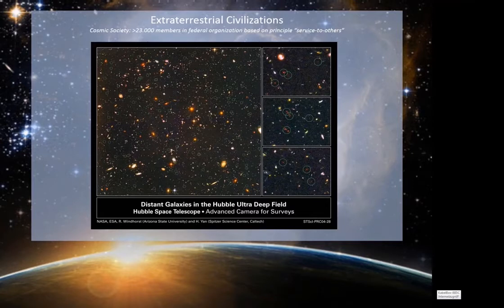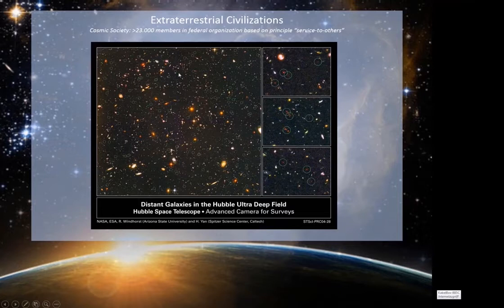What our extraterrestrial friends told us in the preparation of that time after the 21st of June is: what is the home of all the extraterrestrials contacting us at the moment. You can see here on the top that we have more than 23,000 members of different species in our universe who joined an organization which has the character of a federal organization. They live based on the principle of service to others in that organization in our cosmos.